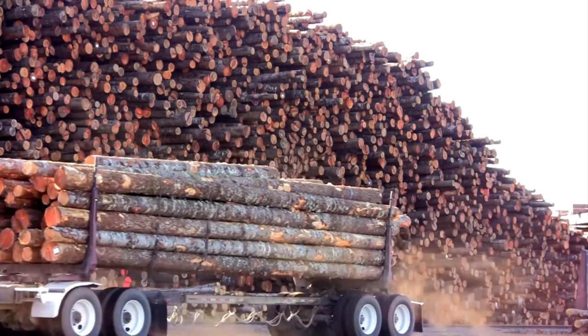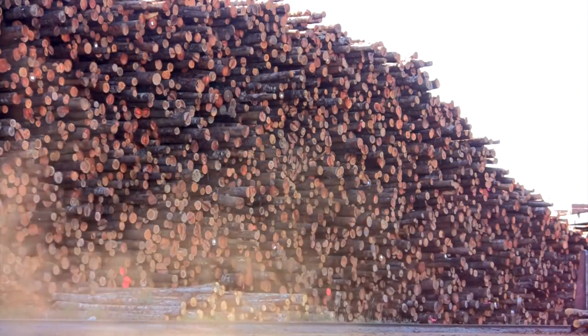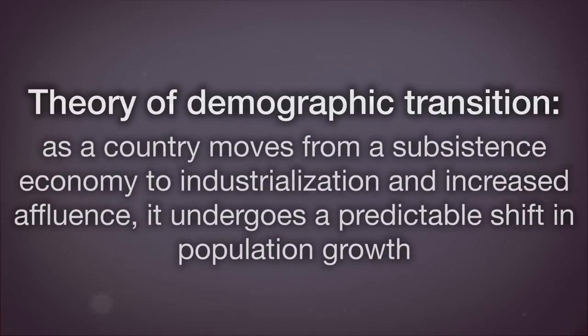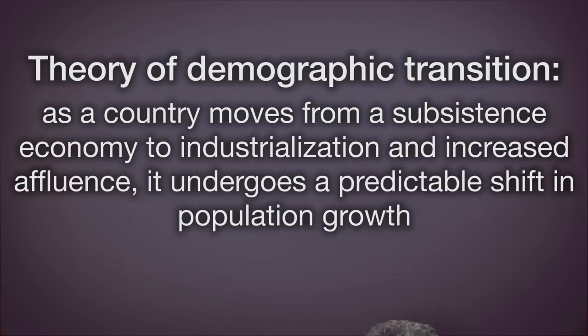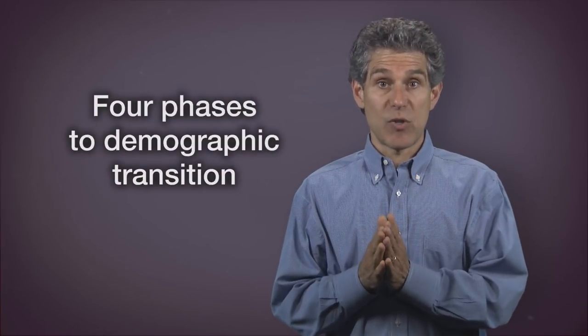and human environmental impact are all closely linked. Many nations, but not all nations, that are developed have gone through a similar pattern of demographic transition, which can be described as follows. The theory of demographic transition says that as a country moves from a subsistence economy to industrialization and increased affluence, it undergoes a predictable shift in population growth. There are four phases to this demographic transition.